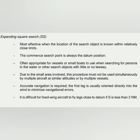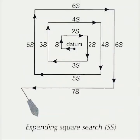The first search pattern is expanding square search. This is used when you are fairly certain about the location of the search object, starting from the datum position. It is appropriate for vessels or small boats searching for a person in the water with no leeway, and due to the small area involved, multiple vessels and aircraft are not required. Accurate navigation is required and the first leg is usually oriented into the wind. You move a distance S into the wind, then another S at 90 degrees to starboard, increasing the distance by S after every two legs. A fixed-wing aircraft cannot perform this pattern if S is less than 2 nautical miles.